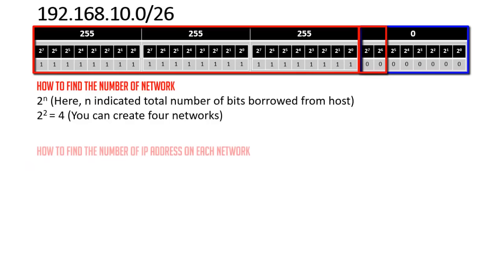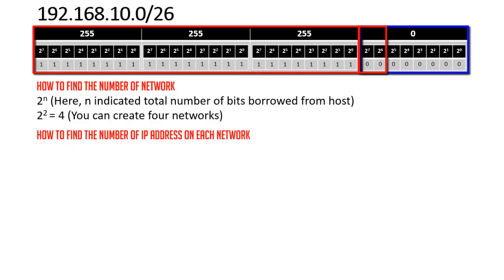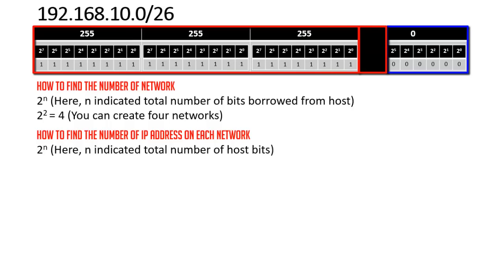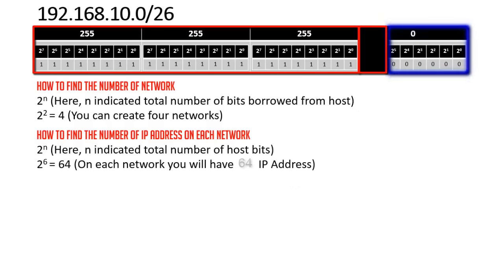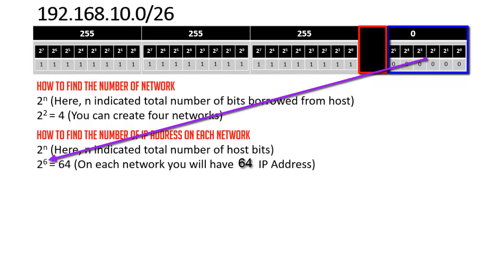To find the number of IP addresses on each network, we use 2^n where n is the remaining host bits. We took 2 bits for the network, so 6 bits remain. 2^6 = 64, meaning you will have 64 IP addresses on each network.